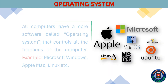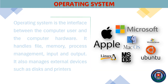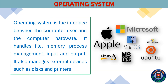All computers have a core software called an operating system that controls all the functions of the computer — examples include Microsoft Windows, Apple Mac, Linux, etc. The operating system is the interface between the computer user and the computer hardware.